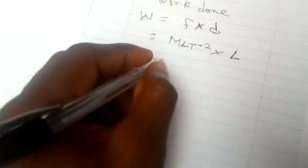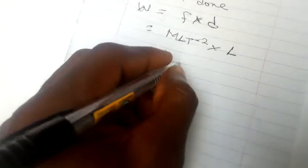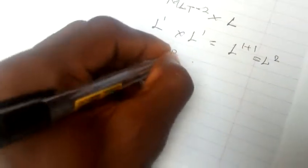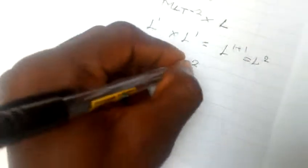Let's bring out the L separately to solve this. L times L is L to the one times L to the one. Using the law of indices, this becomes L to the one plus one, which equals L squared. So we get M L squared T minus two. This is for work done. Thank you. Please don't forget to like, share, and subscribe.